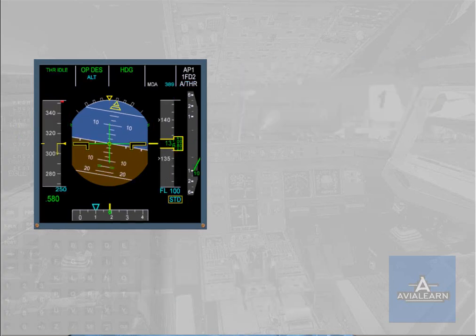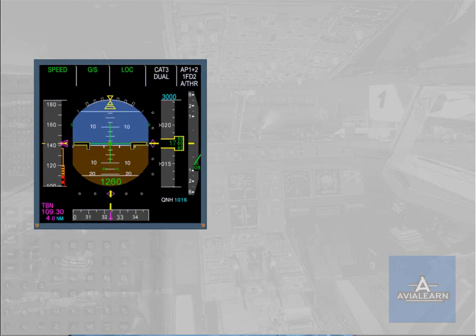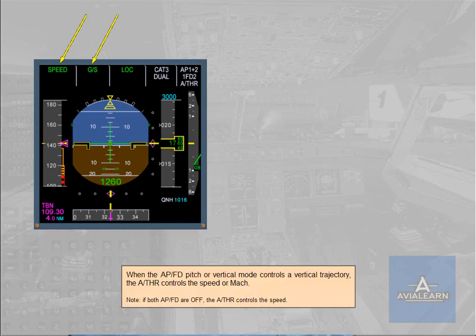The autopilot flight director and autothrust are integrated, meaning there is an interaction between autopilot flight director vertical modes and autothrust modes. When the autopilot flight director pitch or vertical mode controls a vertical trajectory, the autothrust controls the speed or Mach. Note: if both autopilot flight directors are off, the autothrust controls the speed.